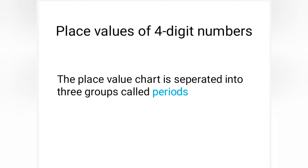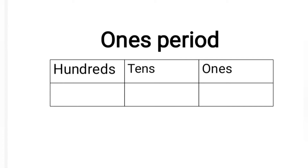Next, let us learn about the place value of four-digit numbers. The place value chart is separated into three groups called periods. The first period is called the ones period. Under the ones period, there will be three place values: ones, tens, and hundreds. The first three digits will be written under the ones, tens, and hundreds columns.